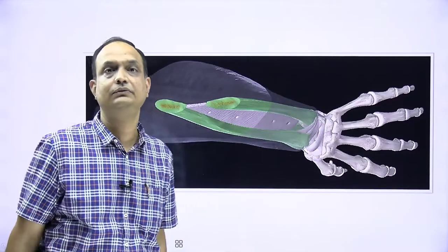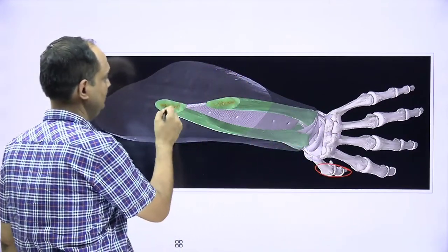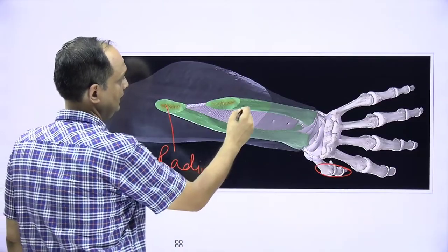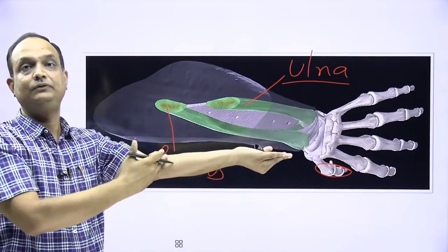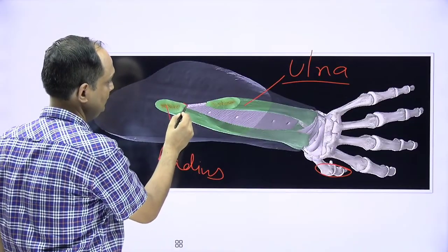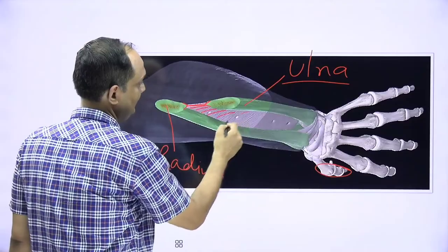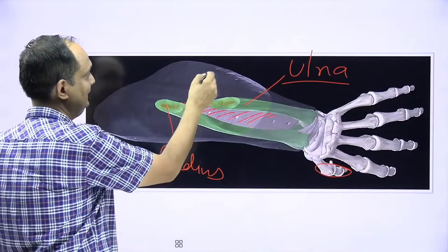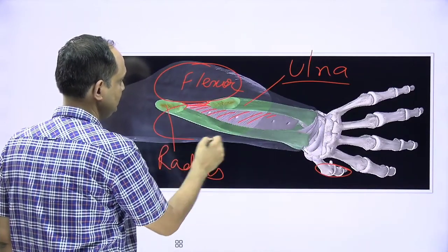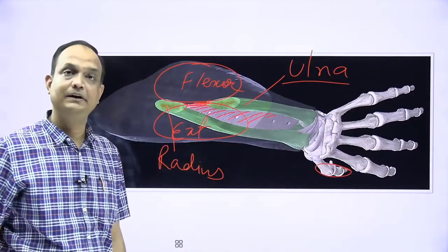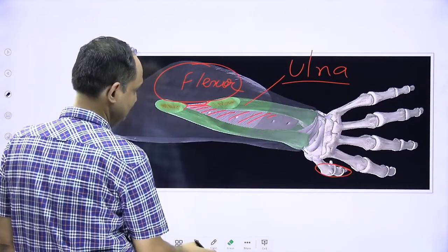Looking at a cut section of the left forearm, with the thumb indicating the radial side, you can see the two interosseous borders of the radius and ulna facing each other, with the interosseous membrane in between. The anterior compartment contains the flexor muscles, and the posterior compartment — today's topic — is the extensor compartment.